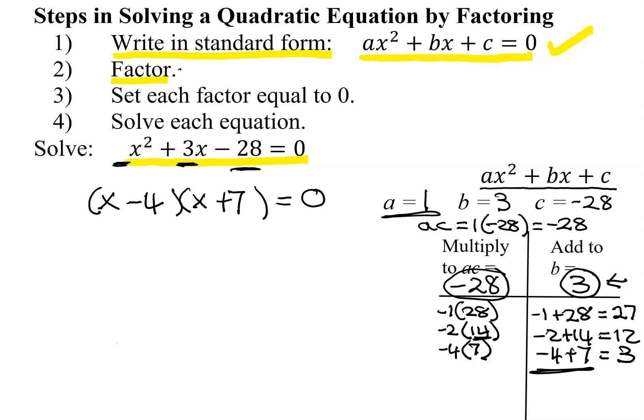So now I've done step 2. Step 3 says set each factor equal to 0. Two numbers multiplied together equals 0. One of them has to be 0. So you set both of them equal to 0.